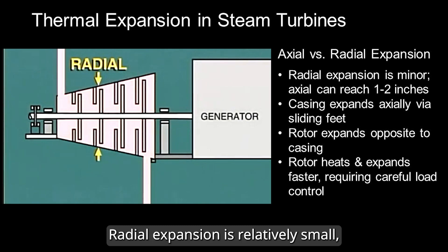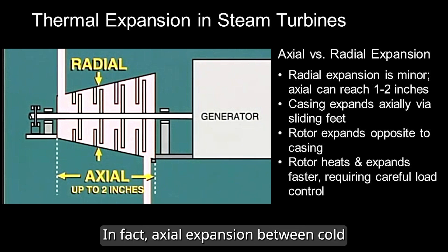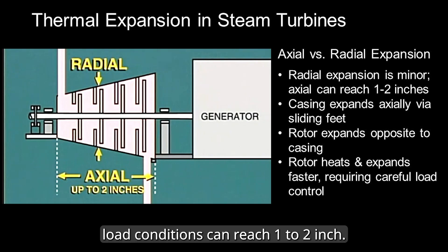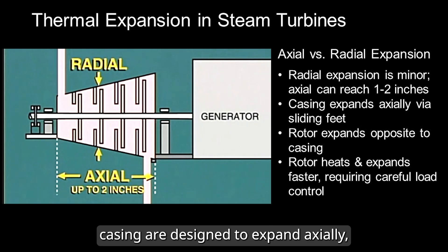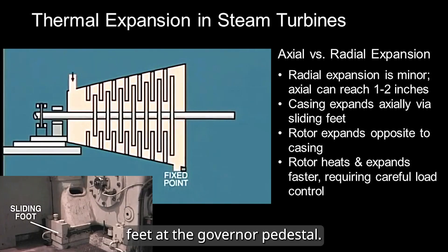Radial expansion is relatively small, but axial expansion is much more significant. In fact, axial expansion between cold and full load conditions can reach 1 to 2 inches. To accommodate this, turbine casings are designed to expand axially, often using sliding feet at the governor pedestal.